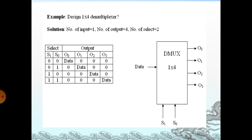Suppose we are going to design a 1-to-8 demultiplexer. How many selection lines are there? Three — S0, S1, S2. The combinations go from 000 to 111. The output will be O0 to O7. If the selection line is 000, the output O0 will be 1 and the remaining outputs are 0. If it is 111, then O7 will be 1. We have to calculate all the outputs and then design the logic diagram.